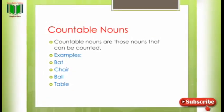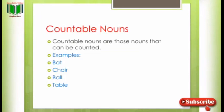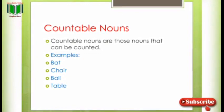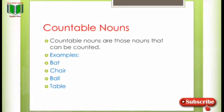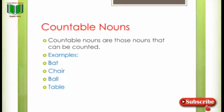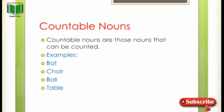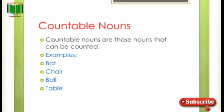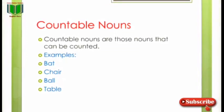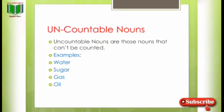Countable nouns — countable کا word دو الفاظ پر مشتمل ہے: count (گننا) + able (قابل) = قابل گنتی۔ Countable nouns are those nouns that can be counted. Examples: bed/beds, chair/chairs, ball/balls, table/tables — یعنی ہر وہ چیز جسے count کیا جا سکے اور plural بنایا جا سکے، اسے countable noun کہتے ہیں۔